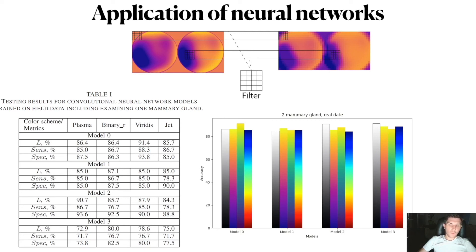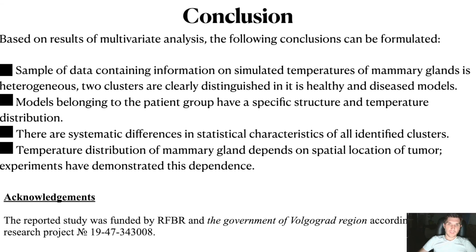In course of the work, four computer models of a convolutional neural network were built for binary classification of patients into healthy and diseased categories. Models trained on images containing results of computer modeling showed fairly high results.